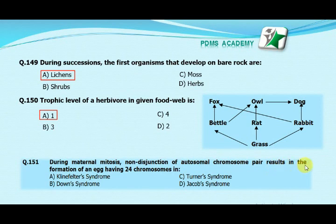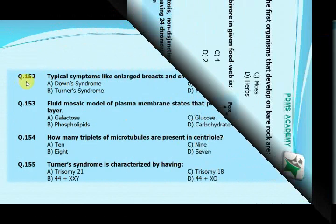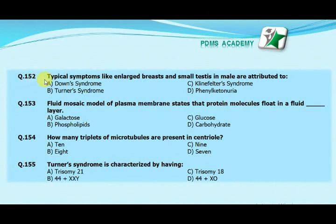During maternal mitosis, non-disjunction of an autosomal chromosome pair results in the formation of an egg having 24 chromosomes in: option A Klinefelter's syndrome, option B Down's syndrome, option C Turner's syndrome, option D Jacob's syndrome. The correct answer is B, Down's syndrome.